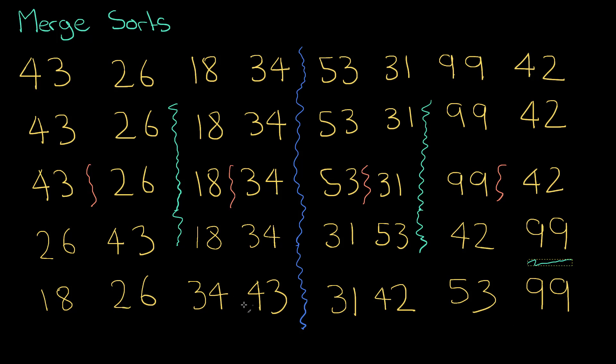Okay and I do exactly the same processes before. I'm only looking at the first number of each of the lists so 18 and 31, so which one's lower? 18, that goes there.